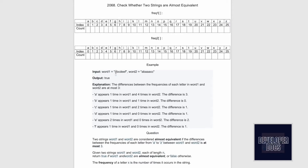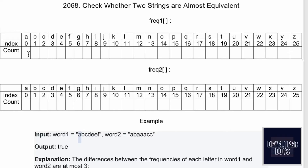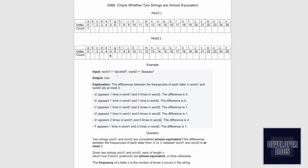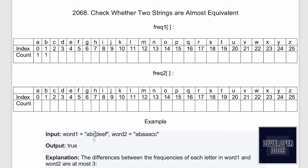We'll iterate word1 from the starting index to the last index. First we encounter letter 'a', so we increment its frequency by 1. Next is 'b' — increment by 1. Then 'c' — increment by 1. Then 'd' — increment by 1. Then 'e' — increment by 1. The next letter is also 'e', so 'e' now has count 2. Next is 'f' — increment by 1. That's the end of word1. Now for word2: 'a' incremented, 'b' incremented, then 'a' again three more times making 'a' count 4, then 'c' twice making 'c' count 2.